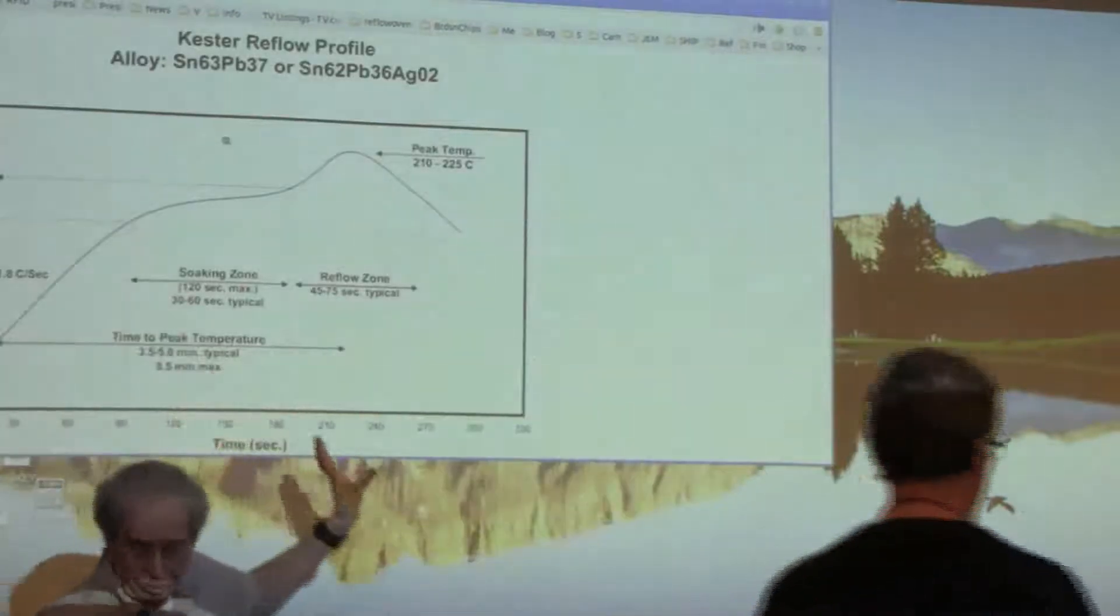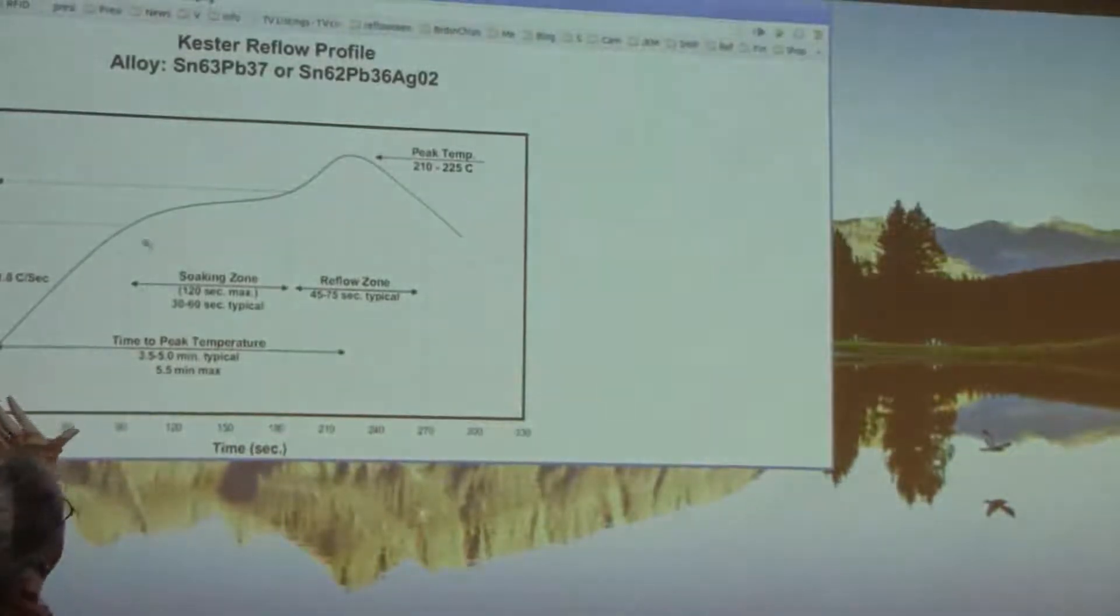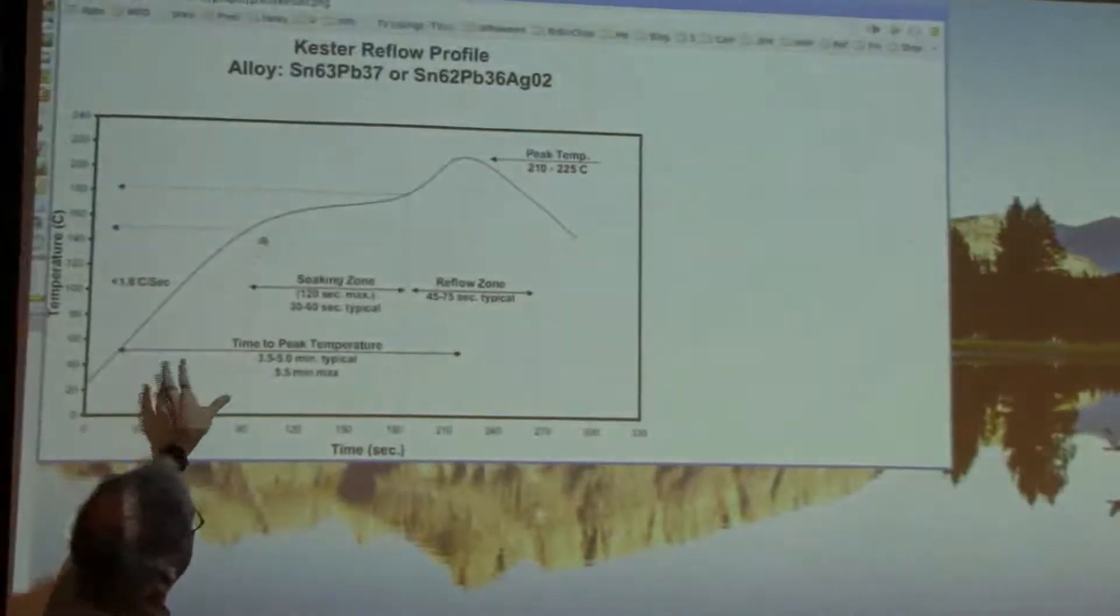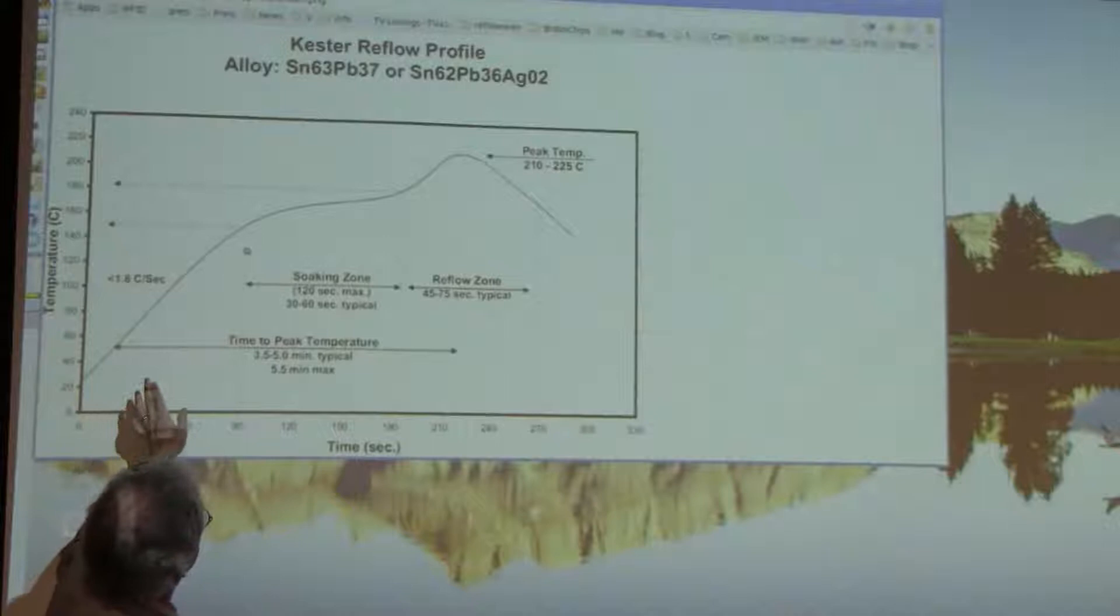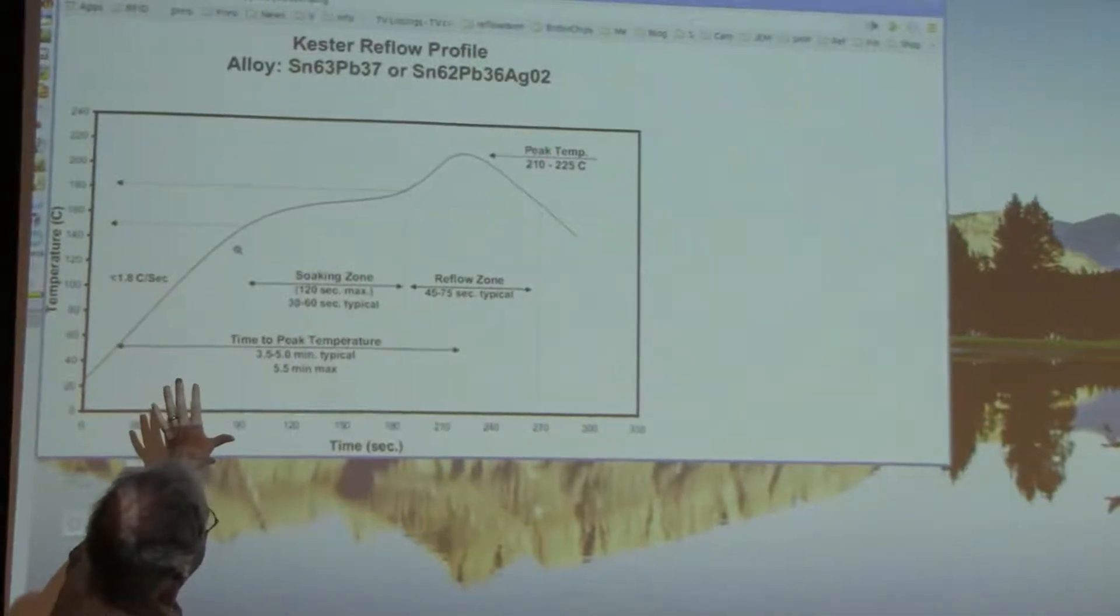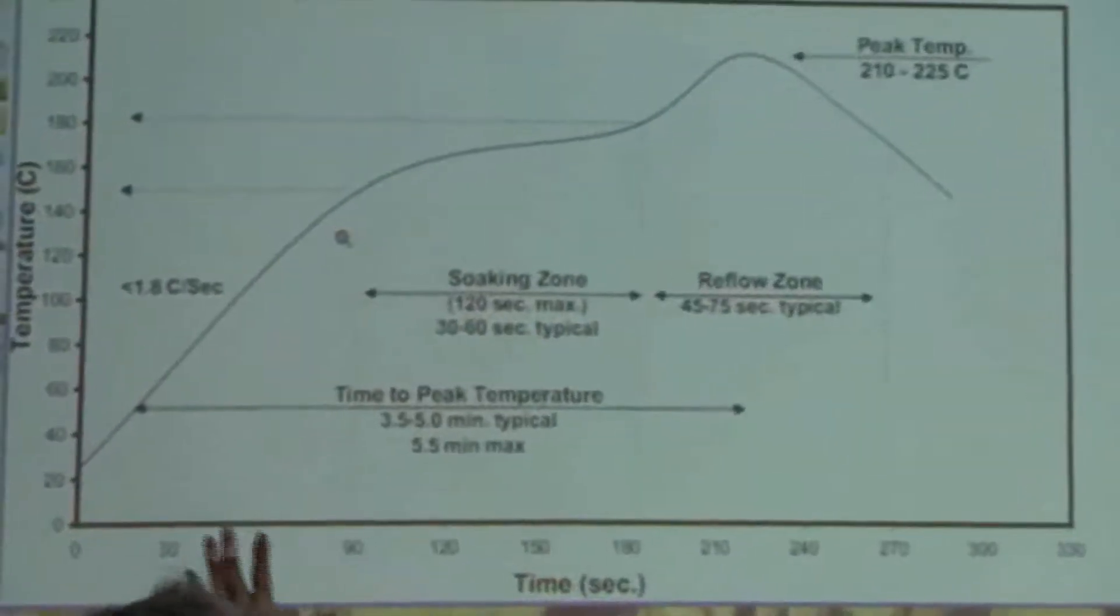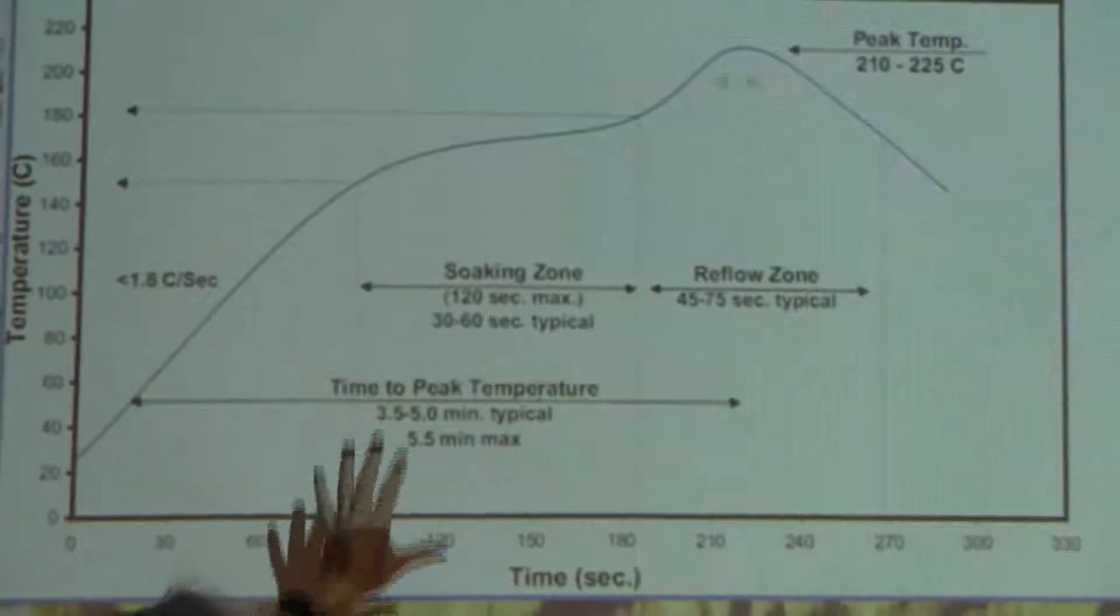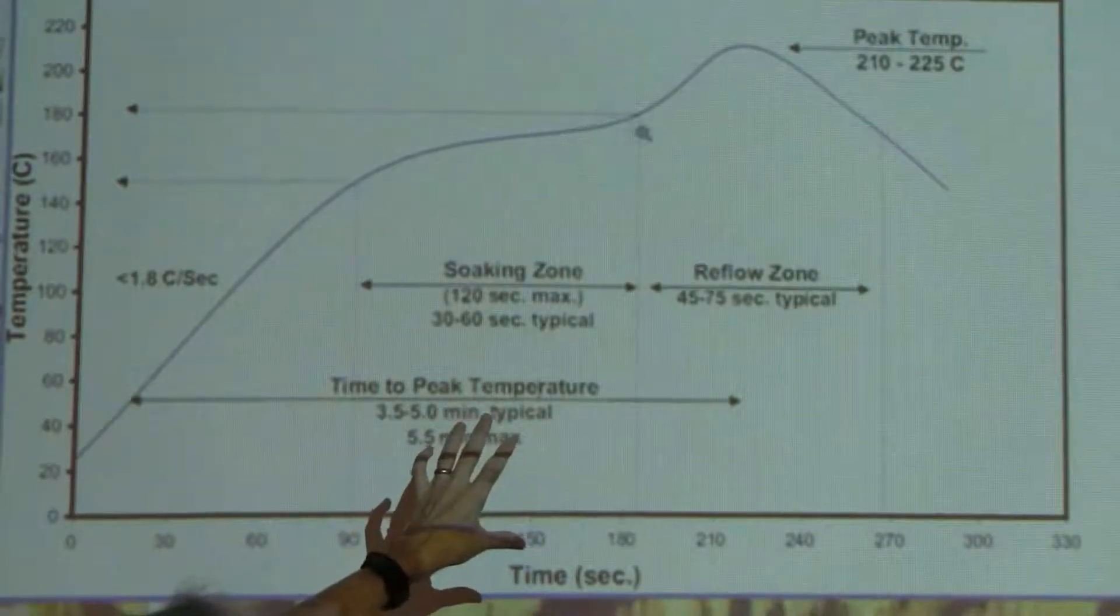This is what you're supposed to do to do a proper reflow soldering process. You're supposed to basically arrange for the PCB temperature, the temperature of the components, namely the solder joint itself, to follow this pattern of temperatures for radiant-type heating, where you maintain a soak zone and a peak temperature, and the solder actually melts and solders right in here, right in these temperatures.